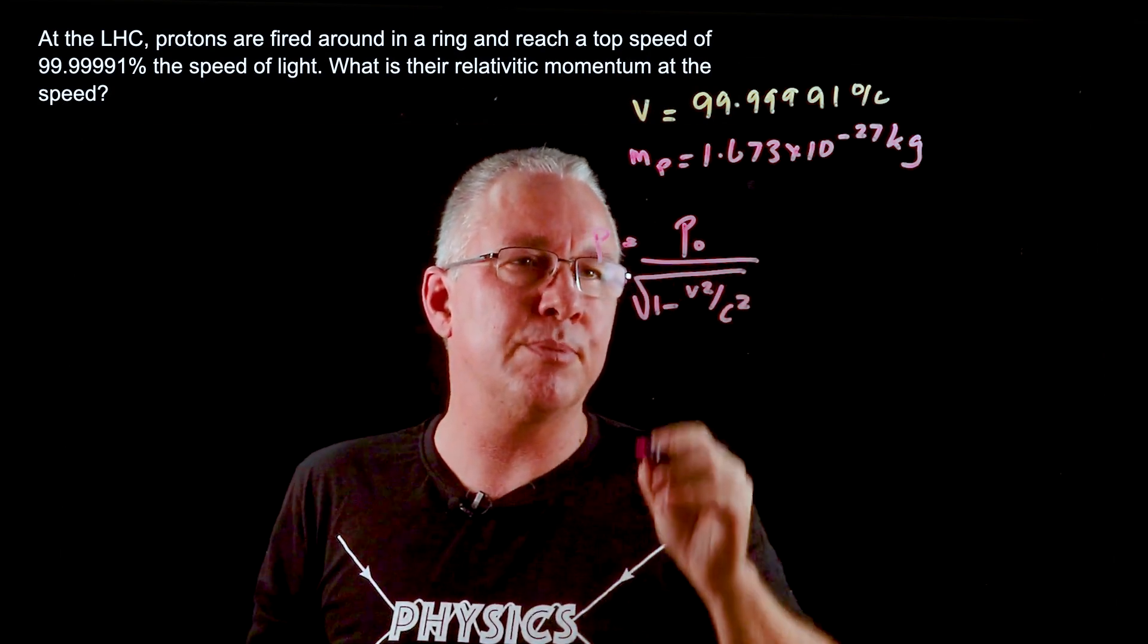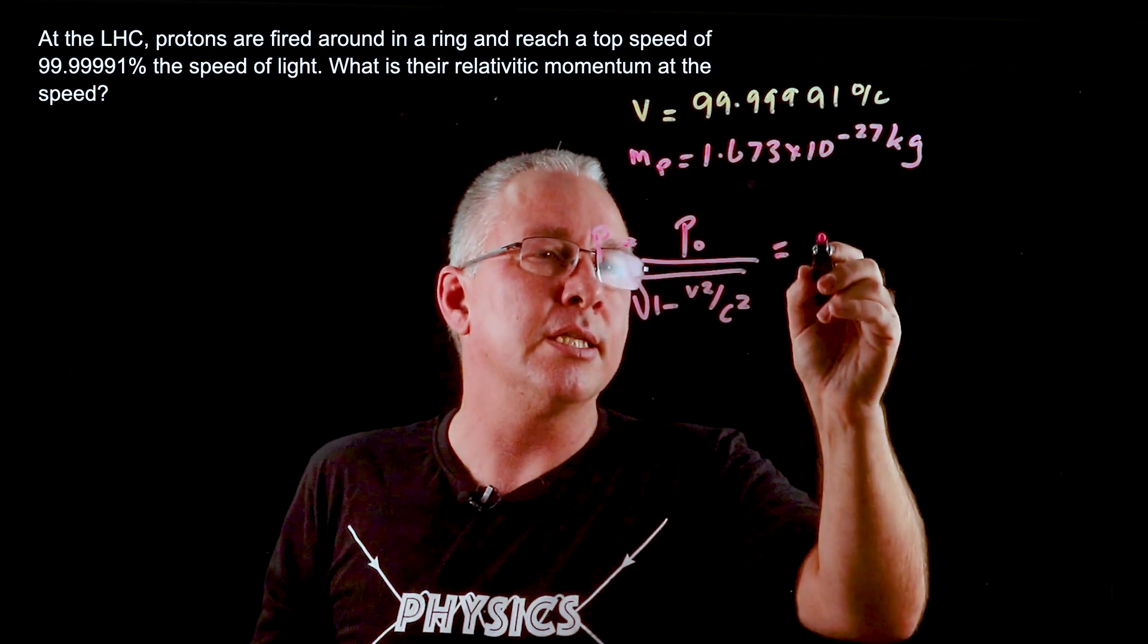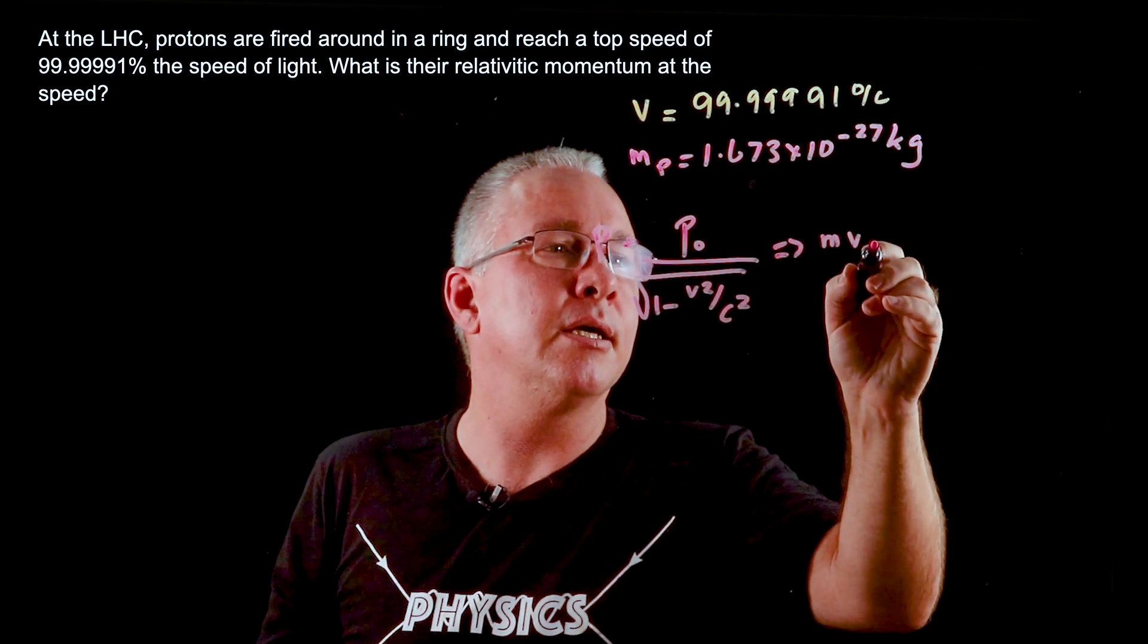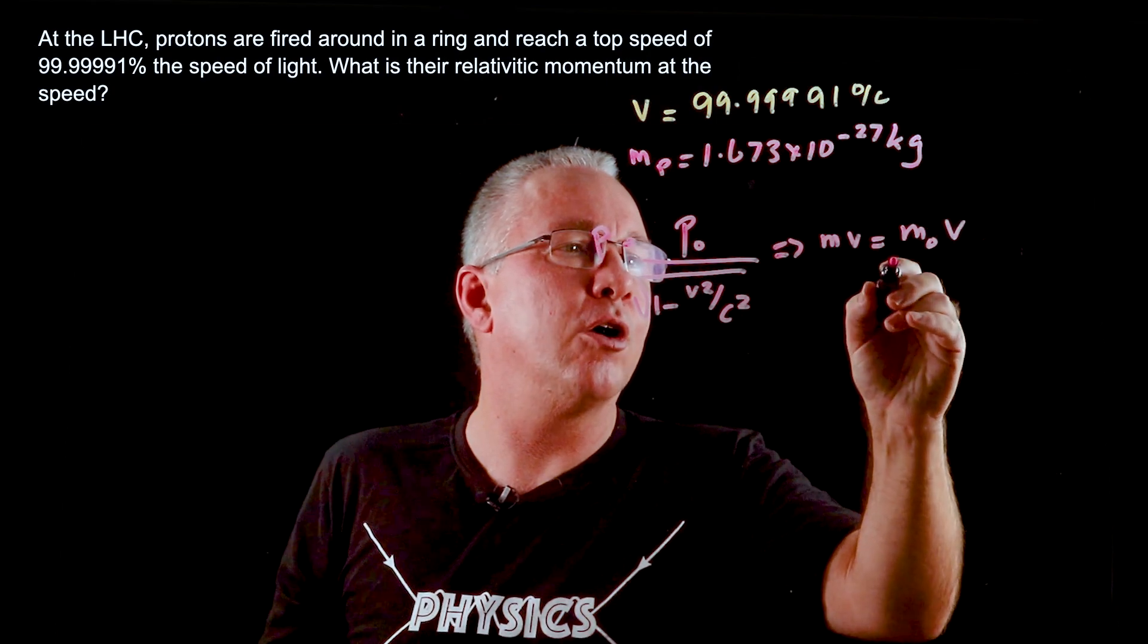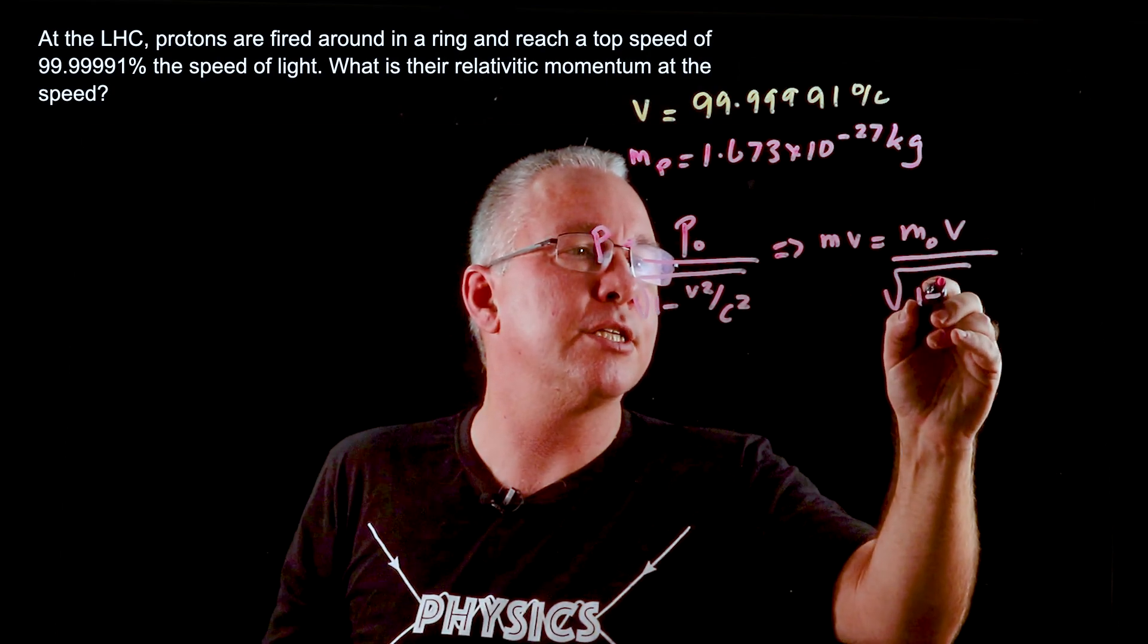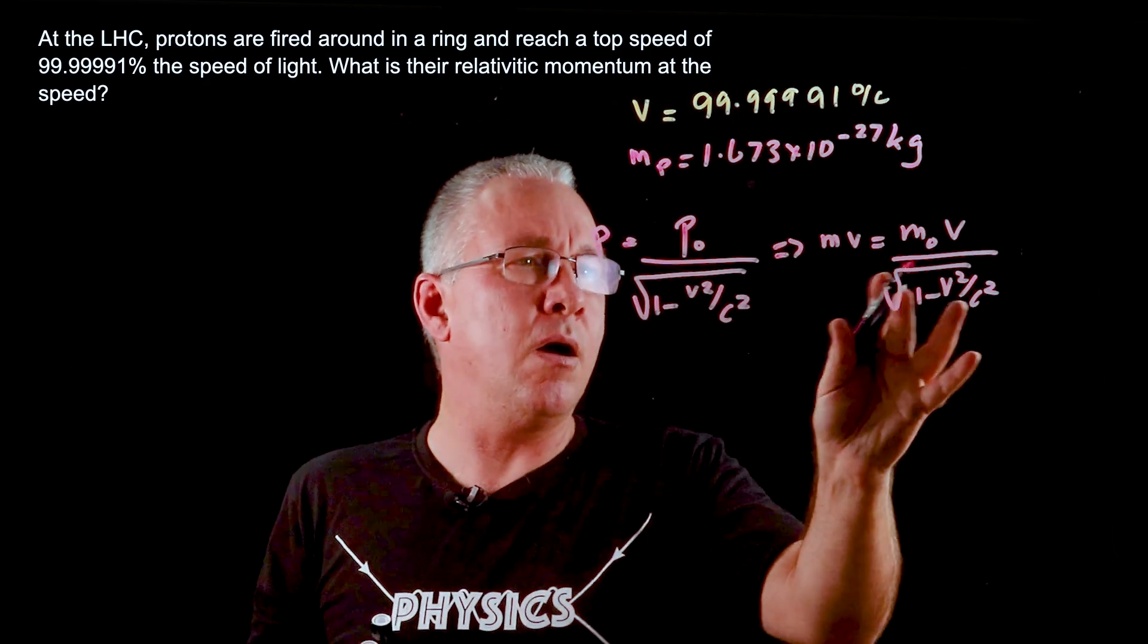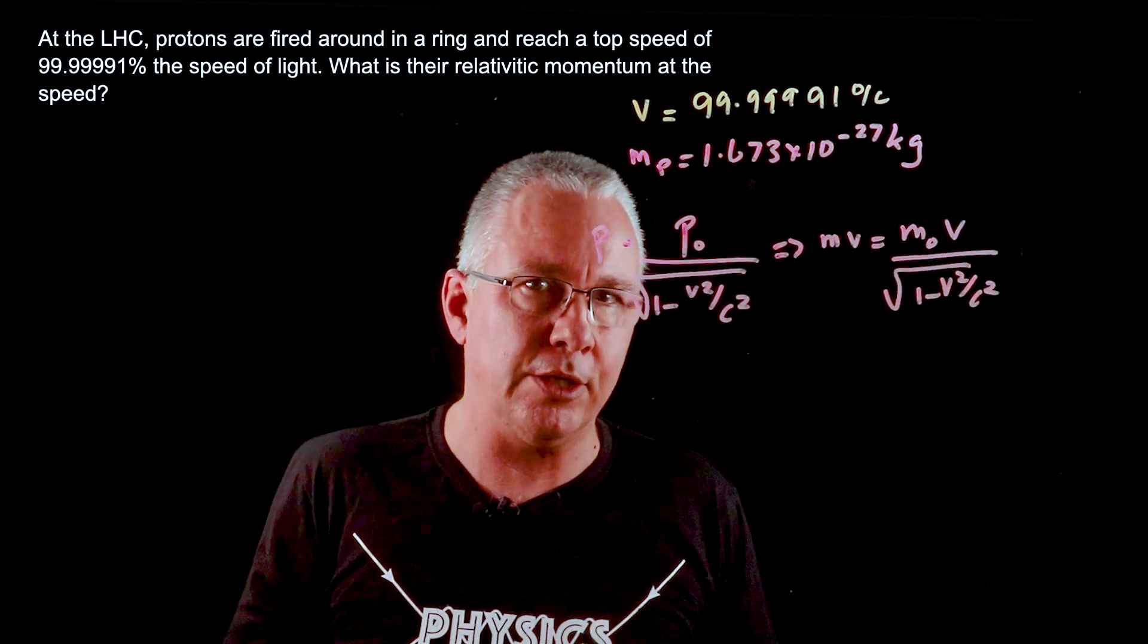Now I know some of you thinking well that's pretty easy. That means basically, and yes it is partly true, that if we look at this from a mass perspective then what we have is mv is equal to m0v over the square root of 1 minus v squared over c squared. So you could say oh look the mass is actually increasing because the v's are the same value.